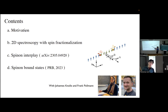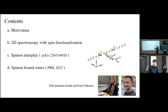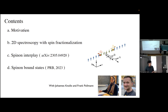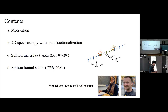Today I'm going to start from the motivation of why we are focusing on 2D spectroscopy, then introduce how the 2D spectroscopy looks like with spin fractionalization. Next, I'll show how to use 2D spectroscopy to distinguish two very similar models: the transverse field Ising model and the twisted Kitaev-type model, which show similar linear response but very different behavior in 2D spectroscopy. Finally, I'll show how bound states formed by fractional particles appear in 2D spectroscopy.